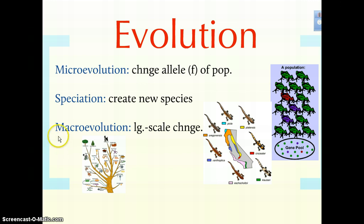At the other end of the spectrum is the concept of macroevolution — these large-scale changes that we see in the tree of life. You have divergences of groups that lead to vastly different features, like the development of quadrupedal organisms, lungs, or a vertebral column. Those sorts of large-scale changes are seen in the fossil record and are studied in macroevolution.